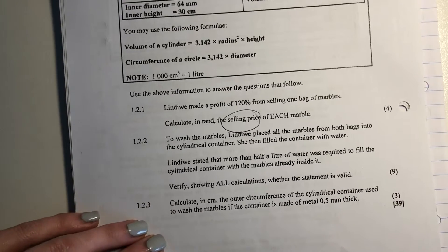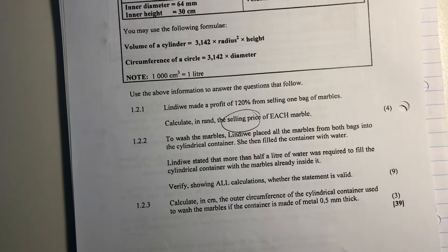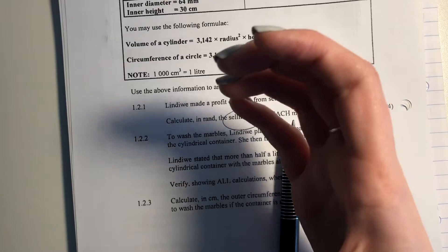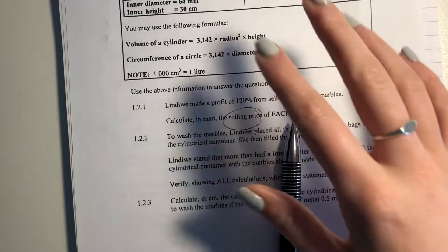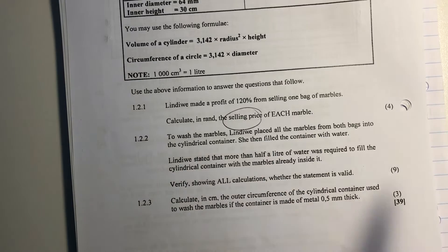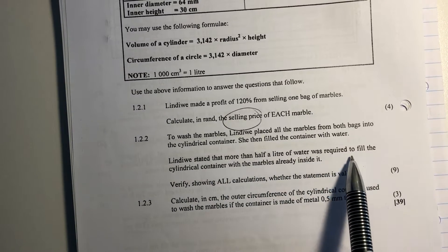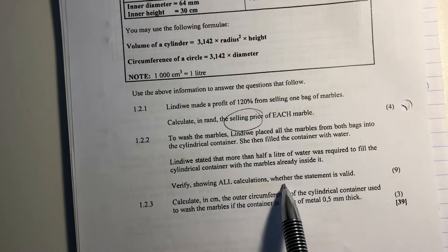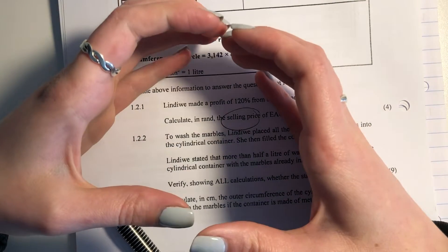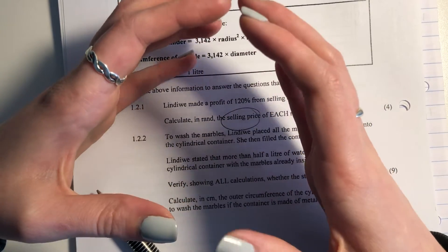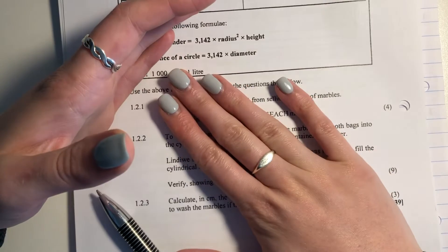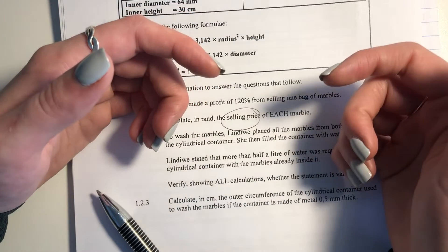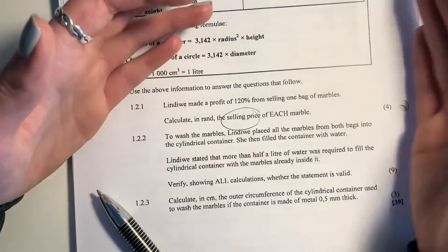Let's look at the next question. To wash the marbles, Lindiria placed all the marbles from both bags into the cylindrical container. She then filled the container with water. So she's put all these marbles into the cylinder, and then she's poured water in and it's going around the marbles and on top of the marbles. Then it says, Lindiria stated that more than half a liter of water was required to fill the cylindrical container with the marbles already inside it. Verify, showing all calculations, whether the statement is valid. So we have this cylinder. She's put all the marbles in, she's pouring water in, and it's basically saying, work out the volume of all the marbles, and then compare that volume to the volume of the full cylinder and see whether the difference in volume is greater than a liter. That's effectively what we're doing. So let's go and do this in a stepwise fashion.